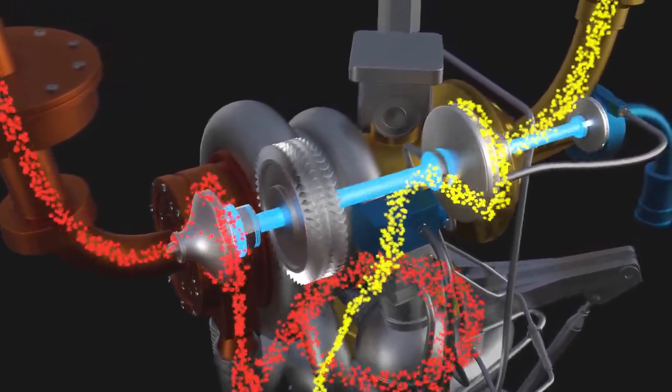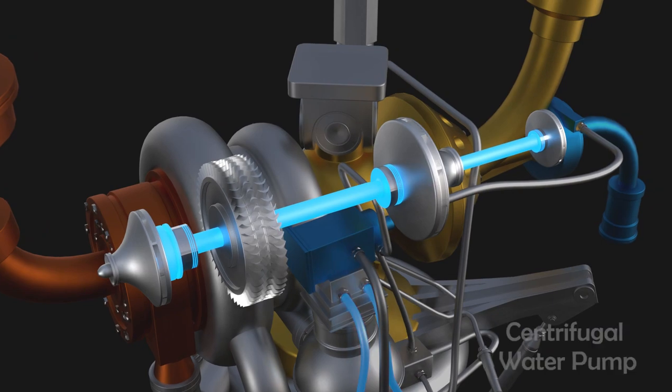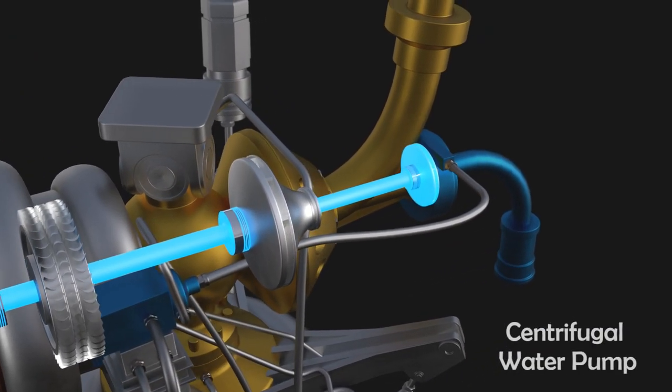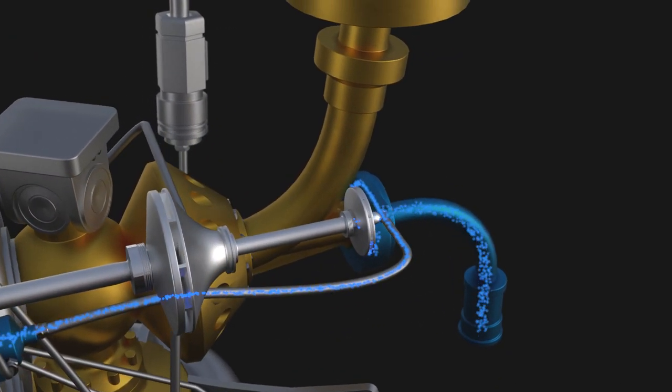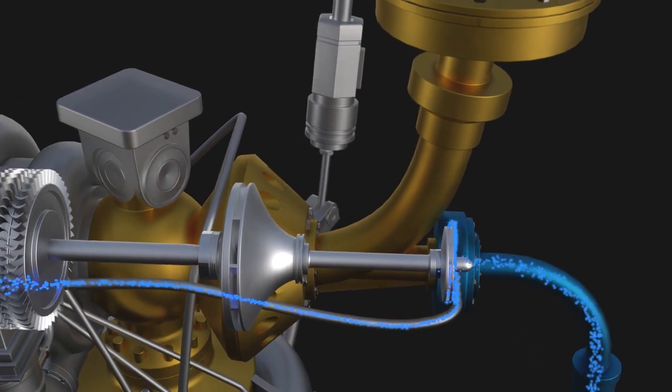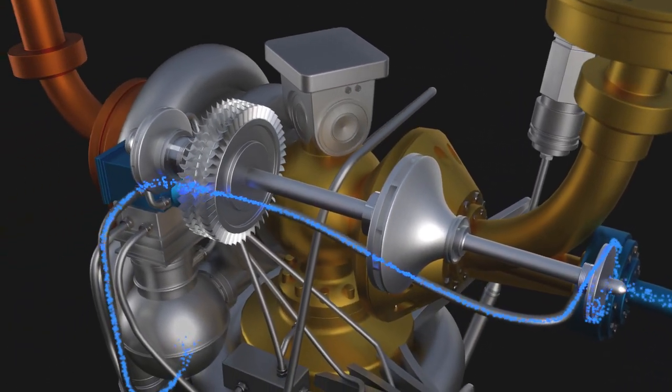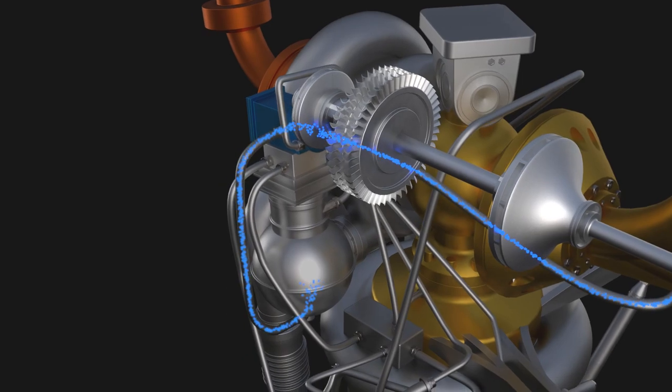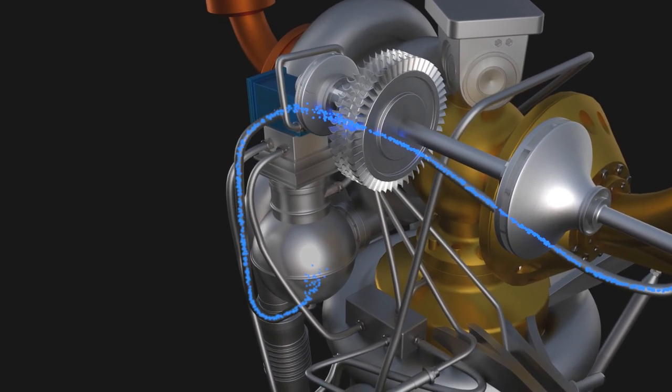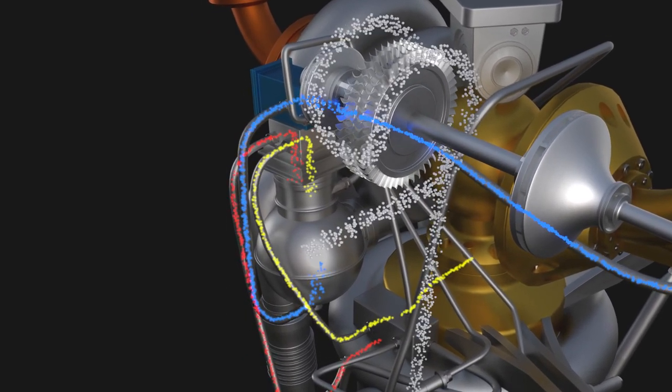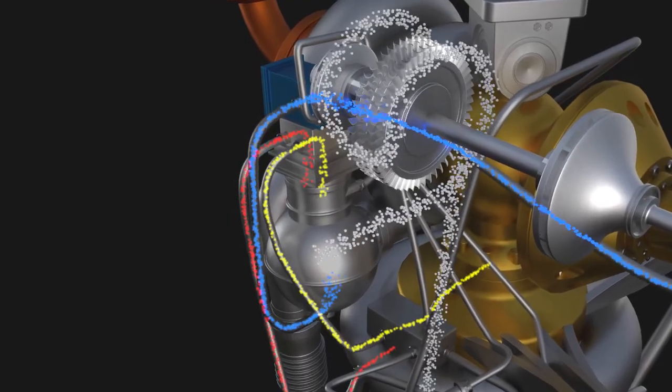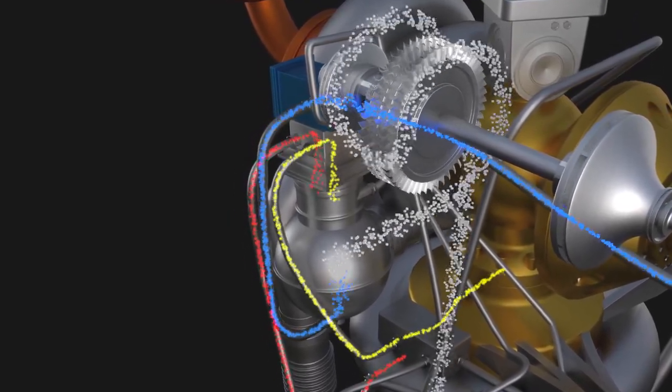The same shaft is also connected to this third pump, and this pump is for water. It brings and feeds the water from these pipes and from the control unit to the gas generator. The water is sprayed into the gas generator. It brings the temperature of the hot gases down to avoid the damage to the turbine blades.